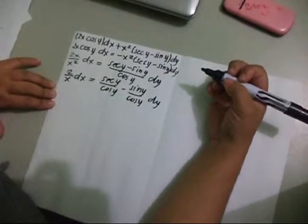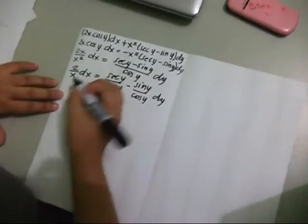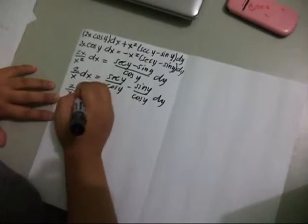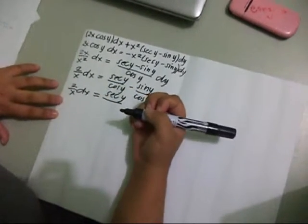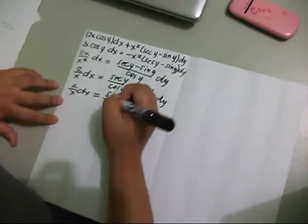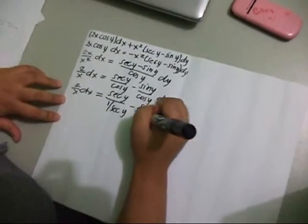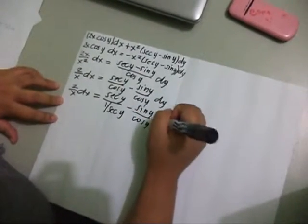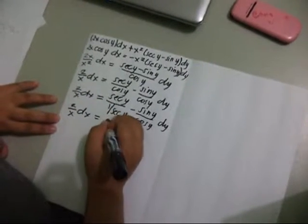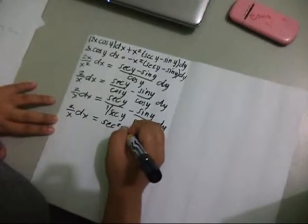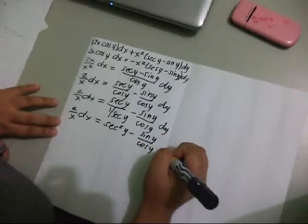Now, this equation coincides with the separable differential equation. Then, 2 over x dx is equal to sec y. Then, cosine y can also be written as 1 over sec y, giving us 2 over x dx is equal to sec squared y minus sine y over cosine y dy.